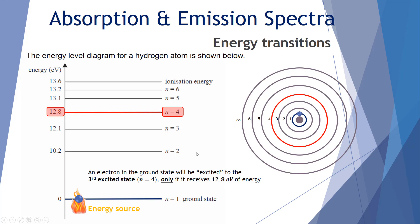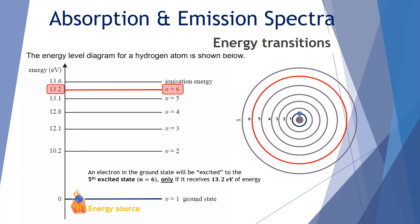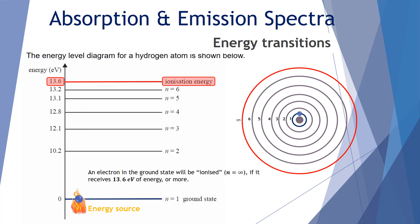The electron can be excited to the third excited state, n equals 4, only when it receives 12.8 electron volts. For the fourth excited state, n equals 5, it must receive exactly 13.1 electron volts. For the fifth excited state, n equals 6, it must receive exactly 13.2 electron volts. Finally, for ionization — n equals infinity — it must receive 13.6 electron volts or more, at which point it escapes the atomic structure and the hydrogen atom becomes an ion.